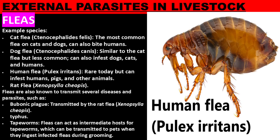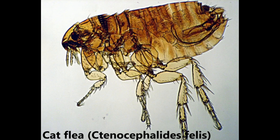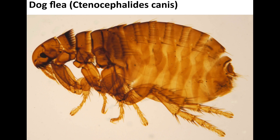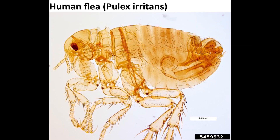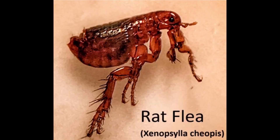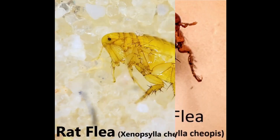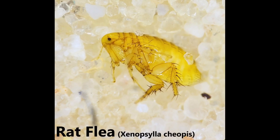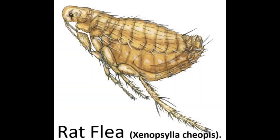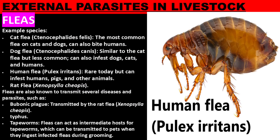Examples of flea species include the cat flea, the most common flea on cats and dogs, which can also bite humans; the dog flea, similar to the cat flea but less common, which can also infest cats and humans; the human flea, rare today, but can infest humans, pigs, and other animals; and rat fleas. Fleas are also known to transmit several diseases and parasites, such as bubonic plague, transmitted by the rat flea. Fleas can act as intermediate hosts for tapeworms, which can be transmitted to pets when they ingest infected fleas during grooming.